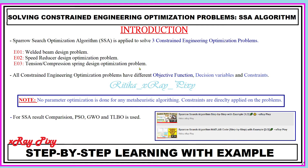Here you can see we have different problems, meaning we have a different objective function for each problem, different design variables for each problem, and different constraints for each problem. So we will not use the same objective function, design variables, or constraints for each — we have different cost functions, different decision variables, and different constraints for each.